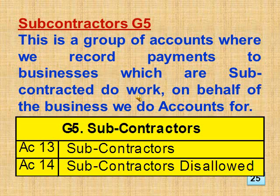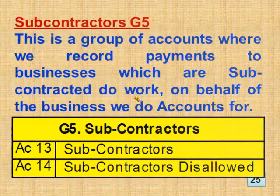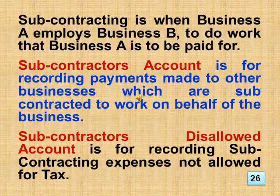Subcontractors Group 5. This is a group of accounts where we record payments made to businesses subcontracted to do work on behalf of the business. We have an account for subcontractors and an account for subcontractors disallowed. The subcontractors disallowed account is for recording subcontracting expenses not allowed for tax.